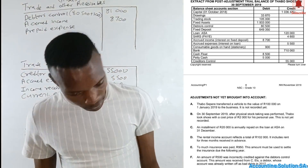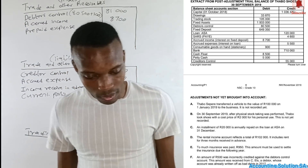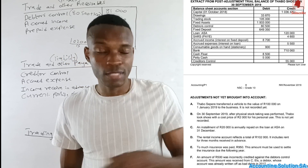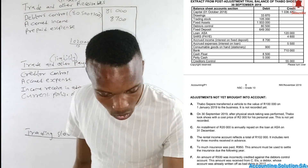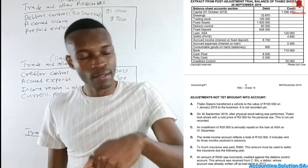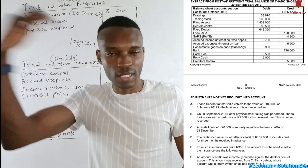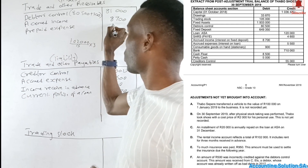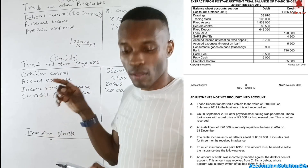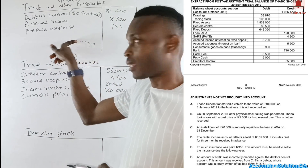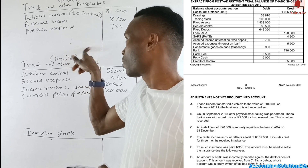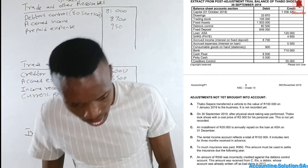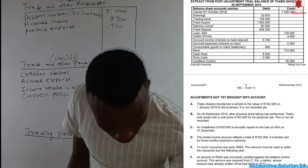The next adjustment: too much insurance was paid — 950 of the amount paid relates to the following year. This is a prepaid expense, meaning we paid insurance in advance for next year. We can claim this amount back, so it is an asset under trading other receivables — 950.